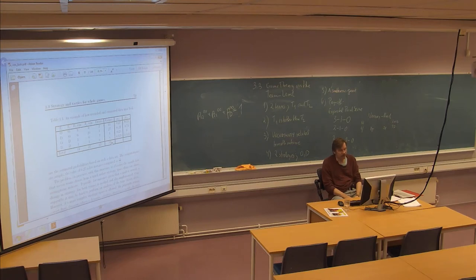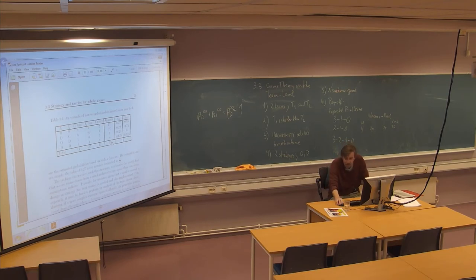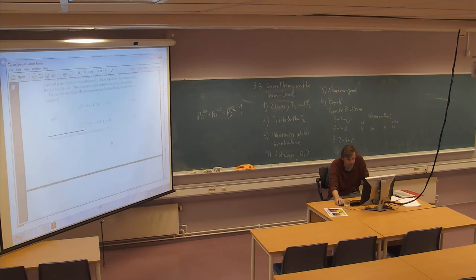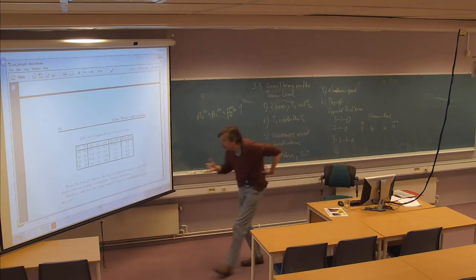We have conditional probabilities depending on the strategic choices of each of the teams. So given that we have this information — we have argued that it may be difficult to get it, but let's assume we have it — what can we use it for? Let's look at an example here with some probabilities which we can take as given.